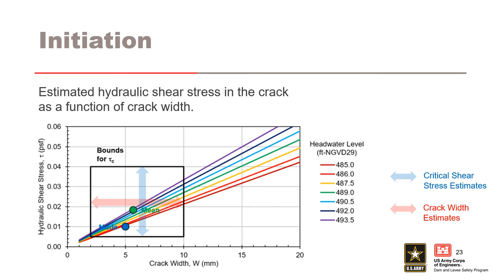Some additional factors that could have acted in concert or by themselves to affect the likelihood of initiation include the possibility that there were defects at the gravel trench foundation contact, desiccation damage to the protective fill placed over the drains prior to placement of the embankment closure section that could have led to a flaw, or saturation settlement could have occurred.